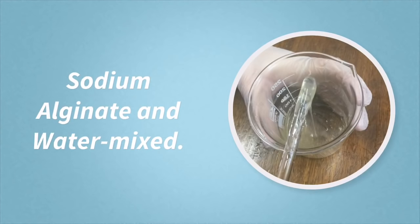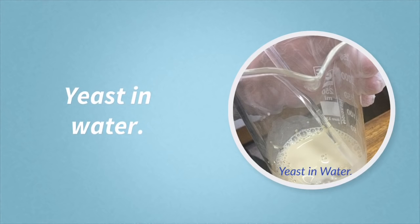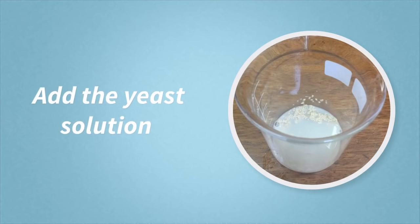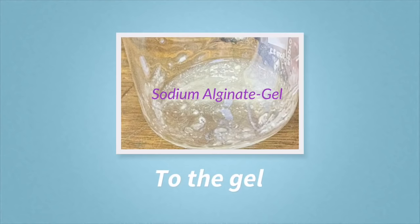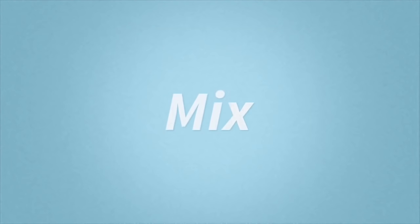The gel was prepared by mixing sodium alginate and distilled water in a beaker. The yeast was prepared by mixing it with distilled water in a separate beaker. The yeast solution was added to the sodium alginate, so it was added to the gel, and this mixture was mixed very well.